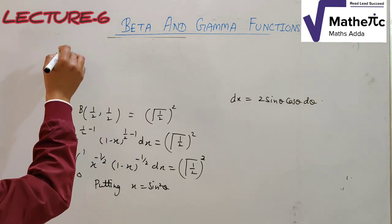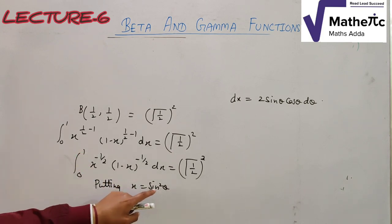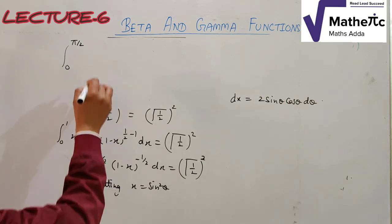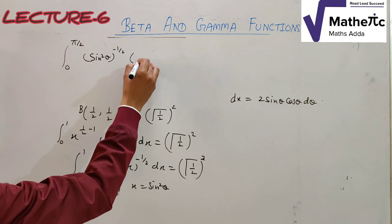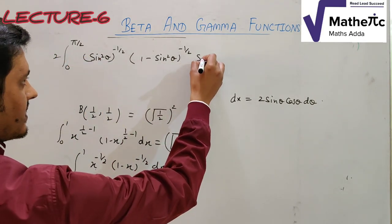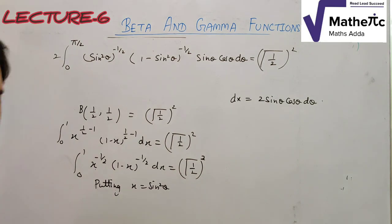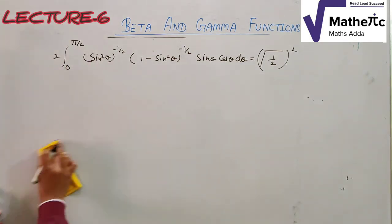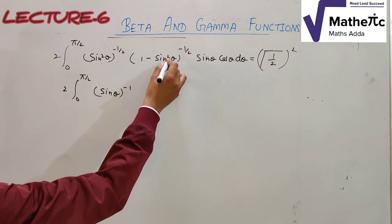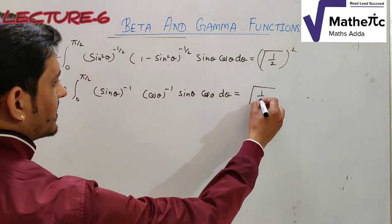When x = 0, θ = 0; when x = 1, θ = sin⁻¹(1) = π/2. So the limits become 0 to π/2. Substituting: x^(−1/2) = (sin²θ)^(−1/2) = 1/sinθ; (1−x)^(−1/2) = (cos²θ)^(−1/2) = 1/cosθ; and dx = 2 sinθ cosθ dθ. The integral becomes 2∫₀^(π/2) (sinθ)^(−1)·(cosθ)^(−1)·sinθ·cosθ dθ, and sinθ and cosθ cancel completely.